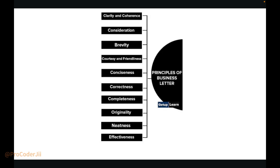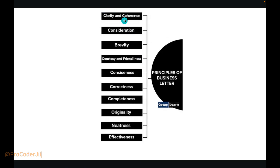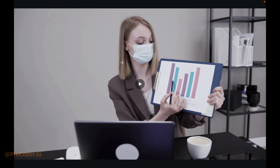Business letter principles — you may have heard of the seven C's. The principles of a business letter include: conciseness, clarity, coherence, brevity, correctness, completeness, originality, and neatness. These mean effectiveness and cleanliness. When someone asks about the principles of a business letter, these are the answers. You can write two to three lines for every word to complete this question.